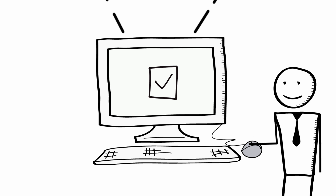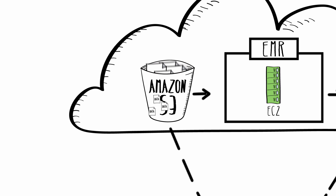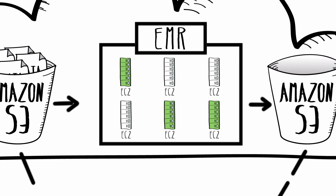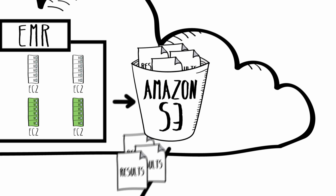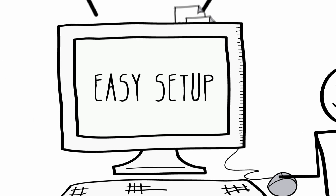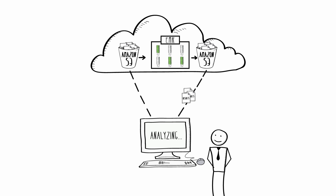Amazon EMR is easy to use. To get started, you can load your data and processing applications into Amazon S3. Then you can launch an Amazon EMR cluster in minutes, and the cluster starts processing your data. You don't need to worry about setting up, running or tuning the clusters — we take care of that so you can focus on the analysis of your data. When your job is complete, you can retrieve the output from Amazon S3.